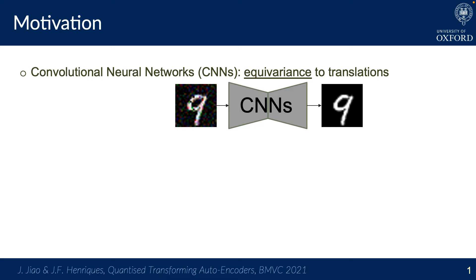What this means is that translations of input images always produce consistently translated outputs. This is illustrated here for an autoencoder, which simply learns to re-encode images without noise, but it applies more generally.